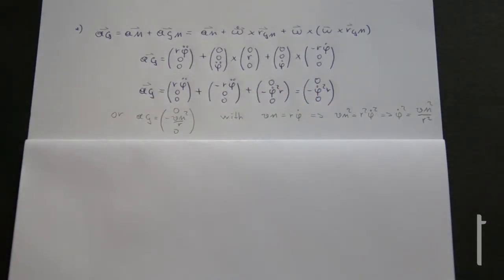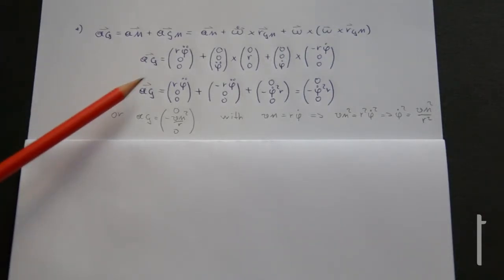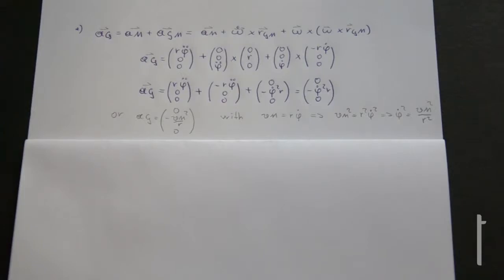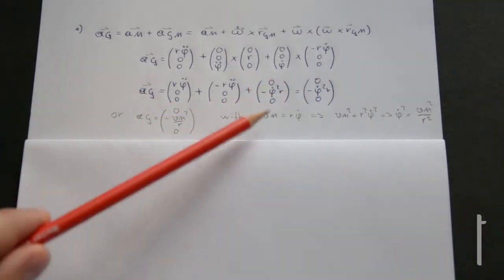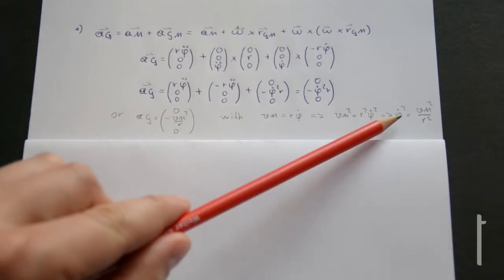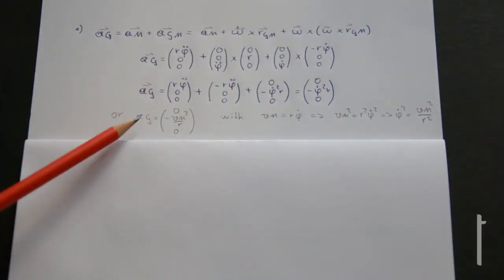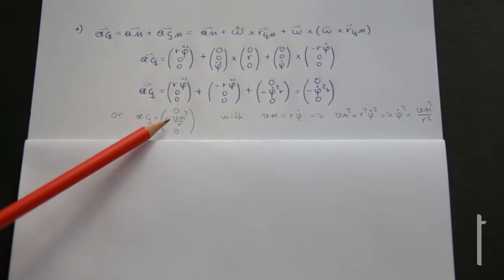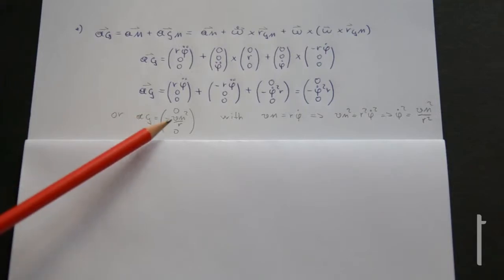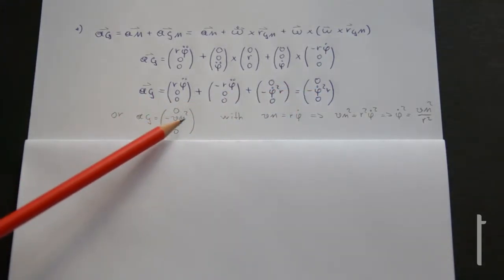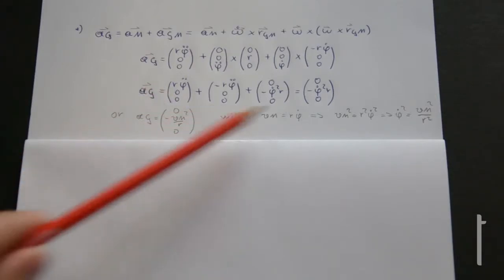This is the curious case of point G: it has no velocity, but it does have an acceleration — namely the normal acceleration. The acceleration of G is -phi_dot² · R. We can also eliminate phi_dot using vm = r·phi_dot, rewriting it as aG = -vm²/R. In this expression the angular velocity phi_dot no longer appears, but the velocity of point M does, which is sometimes useful.